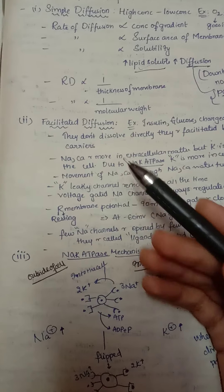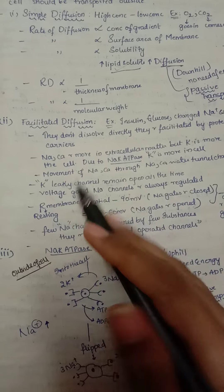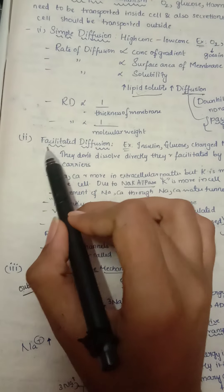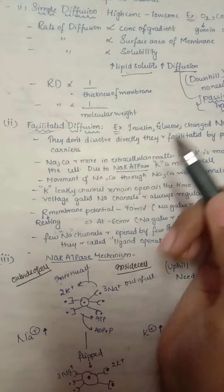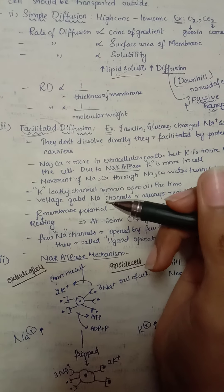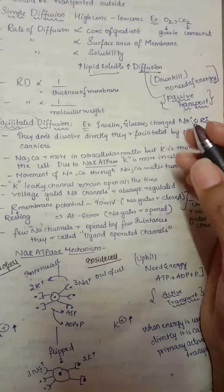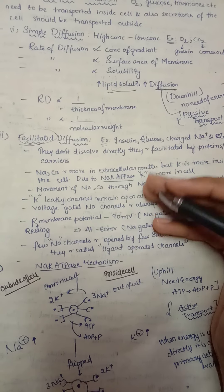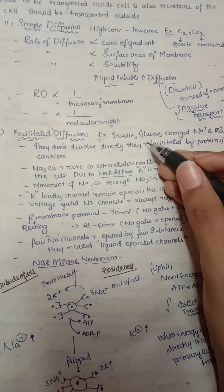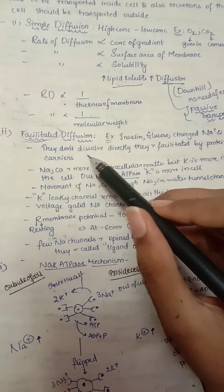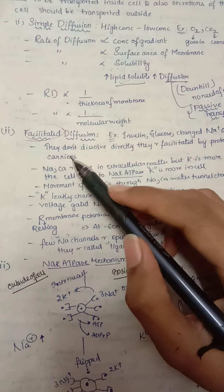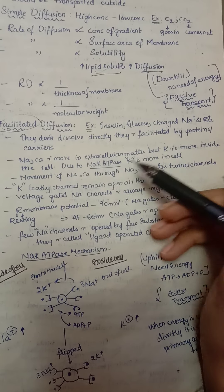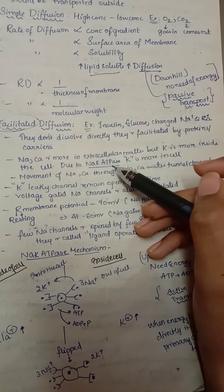Facilitated diffusion is also a passive transport — it doesn't need energy. The difference from simple diffusion is that it is facilitated by certain proteins. Examples include insulin, glucose, charged substances, and very large molecular weight substances like sodium and calcium, which cannot easily pass through the membrane directly and are facilitated by carrier proteins.